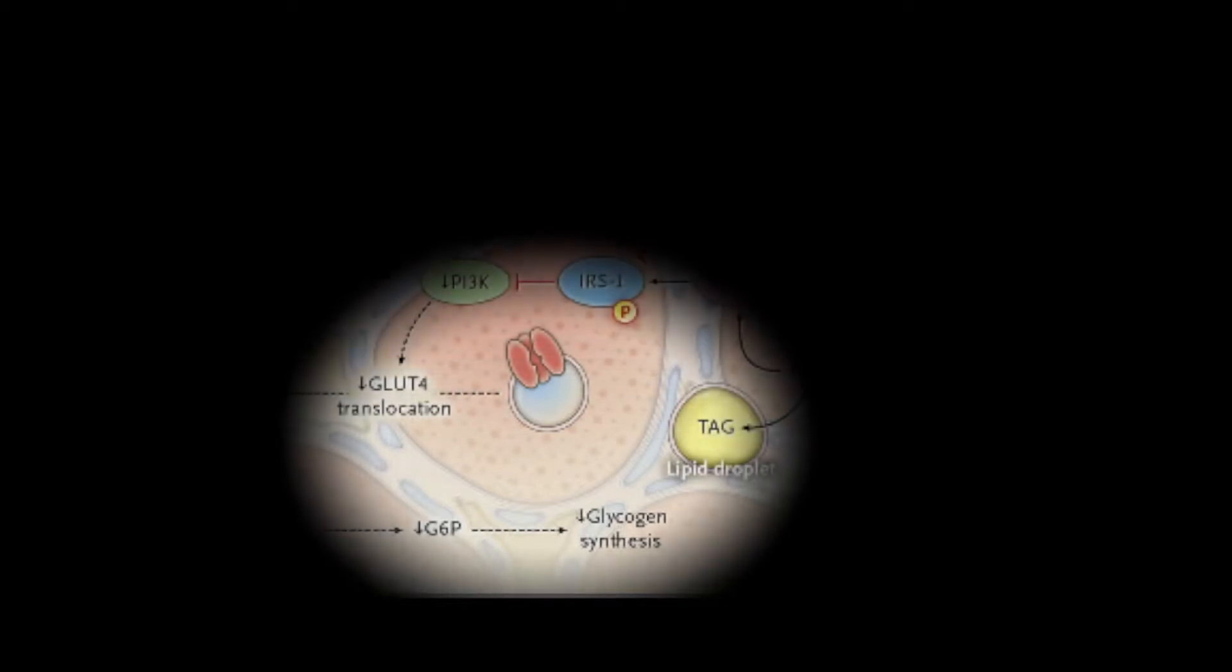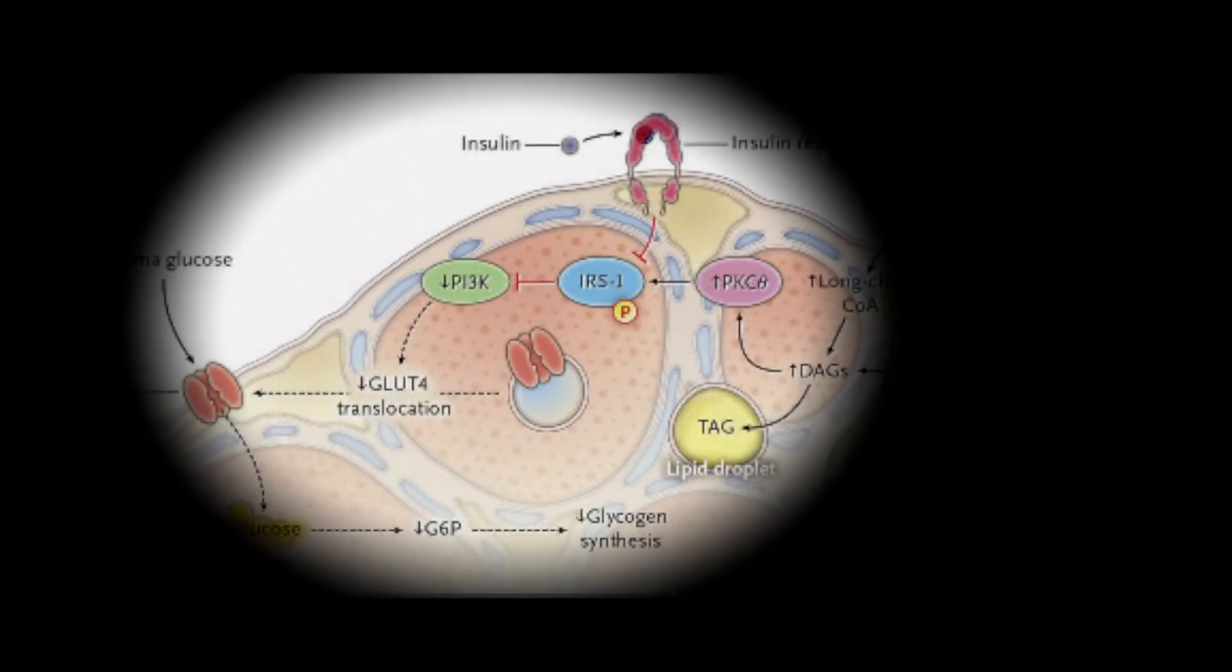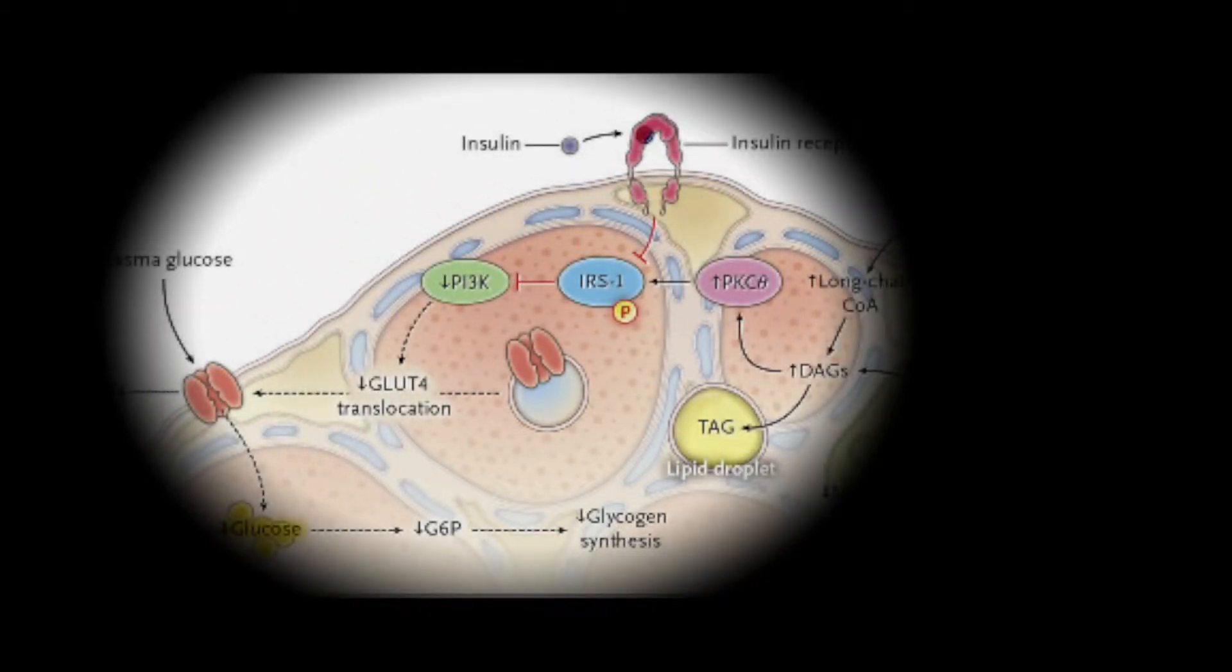Glucose entering the cell causes decreased glucose 6-phosphate. That decreases glycogen synthesis. Glycogen is a storage form of glucose. This is an overview of how insulin normally should help lower blood sugars in the cell.